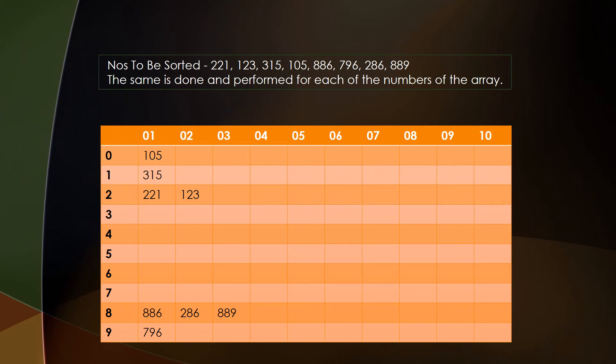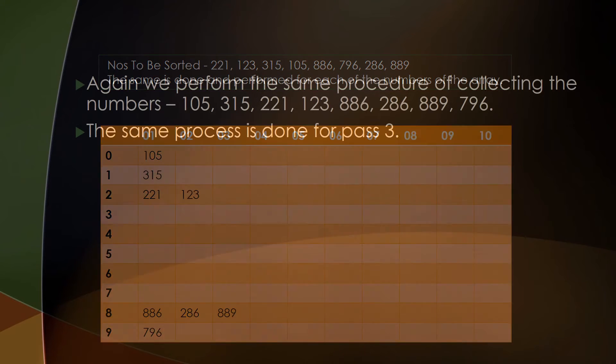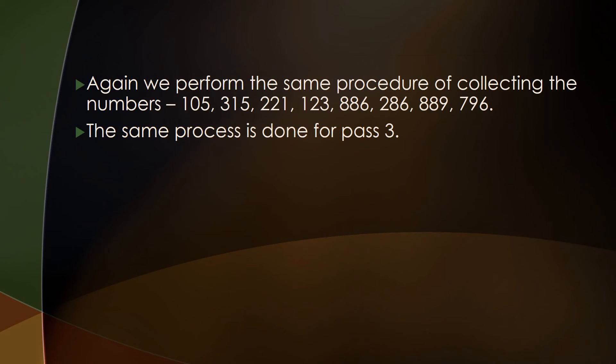We again collect the numbers into a single array in the order in which they occur in the buckets. Here is the array after the second pass.